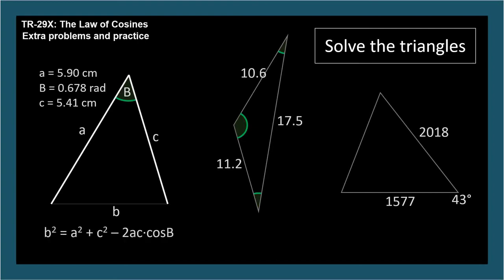b squared equals a squared plus c squared minus 2ac cosine B. We solve this equation for lowercase b and then use the law of sines using the b's to find the other two angles.